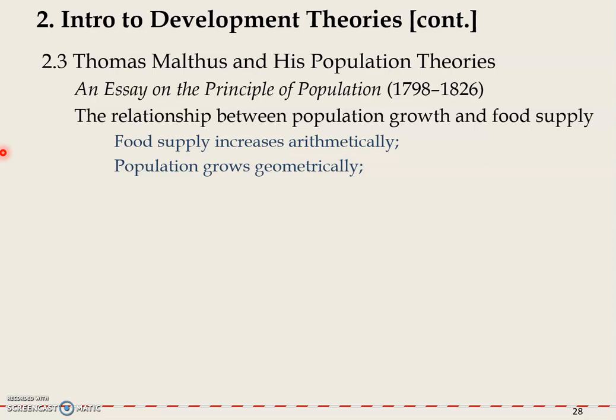We're going to end up with famines, starvation, and diseases. In classwork, in worksheet number five, the first question, you're supposed to graph these two curves — one for food supply and one for population.